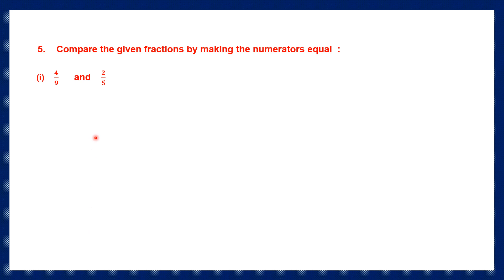Question 5: Compare the given fractions by making the numerators equal. So again we're going to compare fractions, but this time we're going to make the numerators equal. We have 4 by 9 and 2 by 5. Now we have to look at the numerators — we have 4 and 2. They're different, so we're going to find the LCM of the numerators.